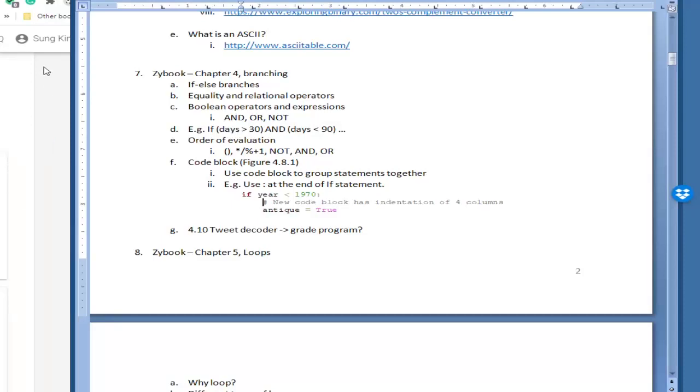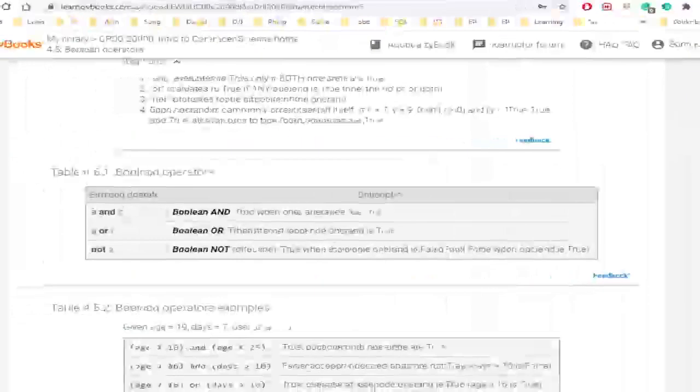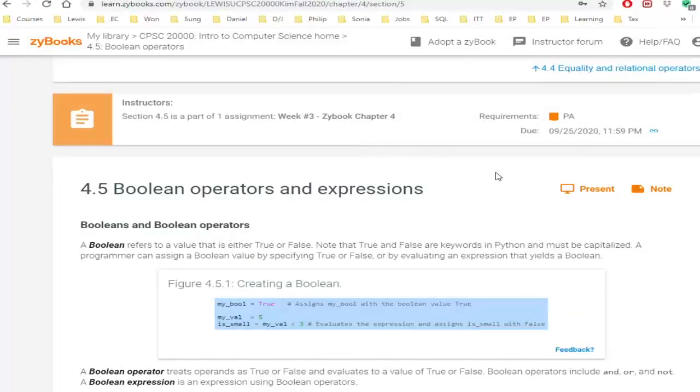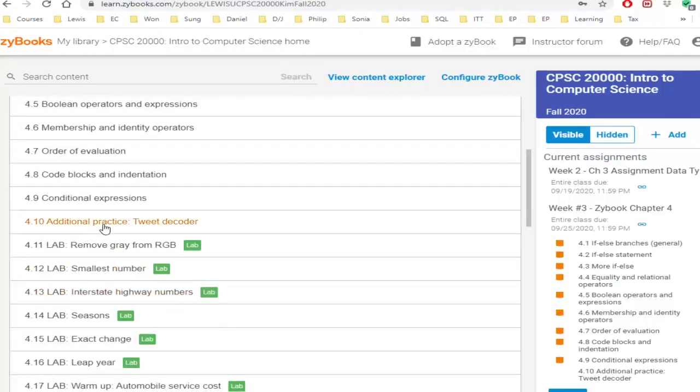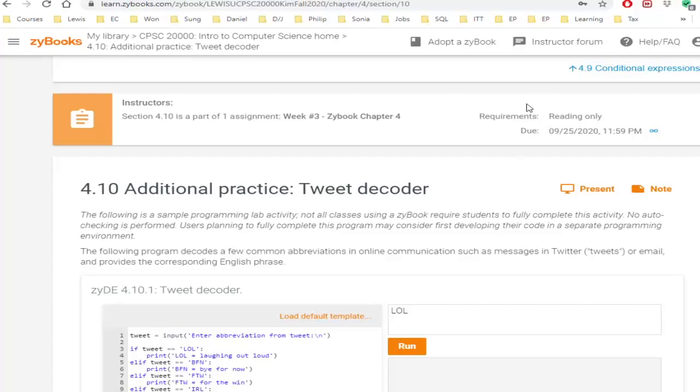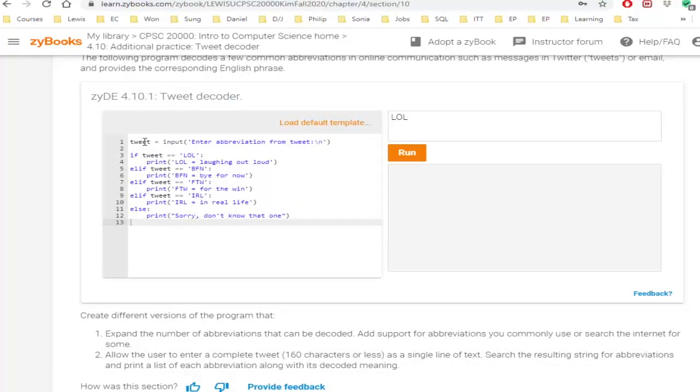Here's one interesting program. Let me show that to you - TweetCoder. Here is code here. If the variable tweet is whatever the person put in, if that text is LOL, then here's a code block. Print 'laughing out loud' and stuff like that. You can use this for your programming assignment that I'm assigning today. Let's say LOL or whatever. Then you click on run, it prints out. Hopefully LOL is laughing out loud.